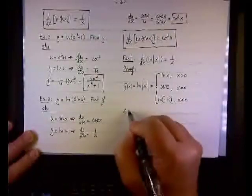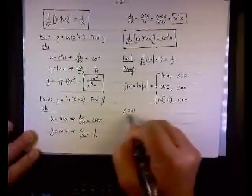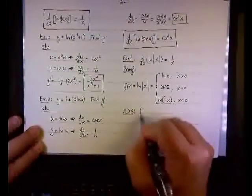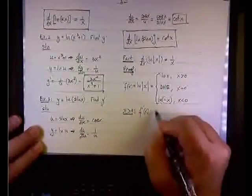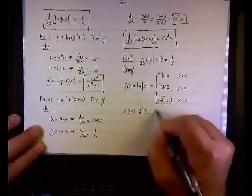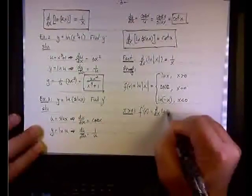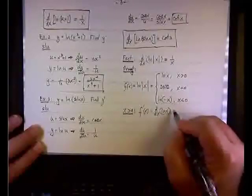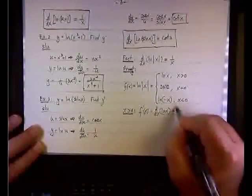So when x is positive, what's going to happen? Well, we take f prime with simply the derivative of the natural log of x, as it says here. And this, we know it to be 1 over x. So we are good here.